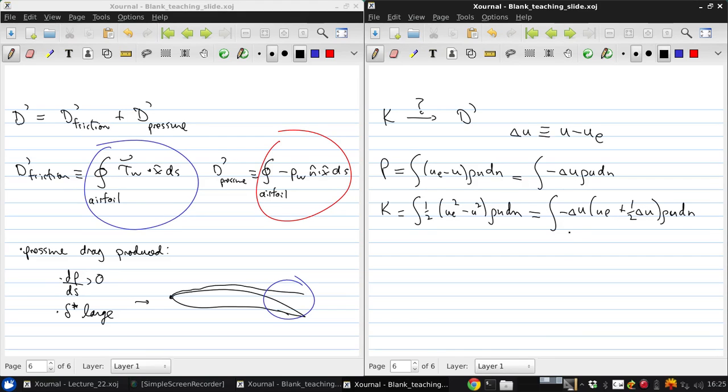It may not be obvious where this term has come from. Let me explain that briefly. So if we rewrite this as negative delta U times UE plus one-half delta U, that's equal to negative delta U times UE minus one-half delta U squared.